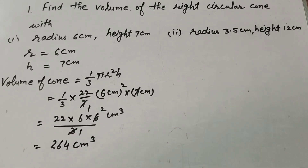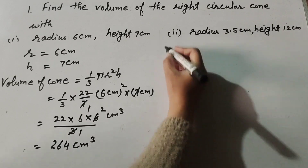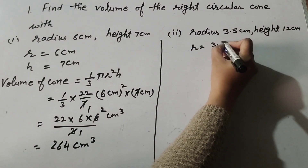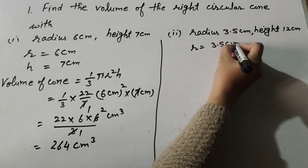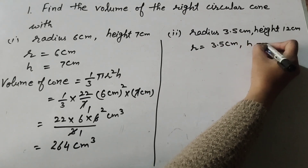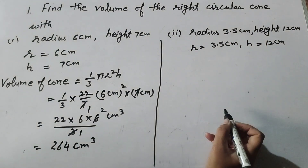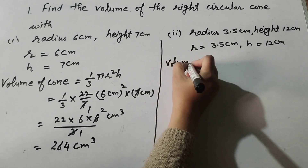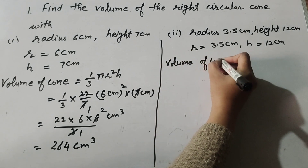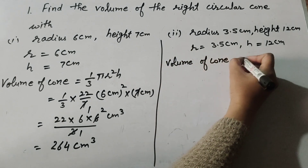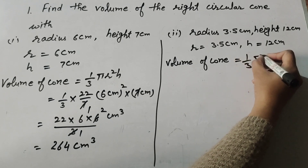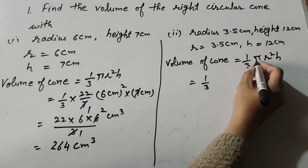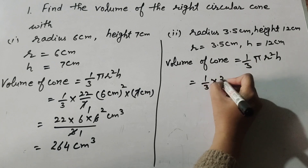Now we move to the second part. Radius r is equal to 3.5 centimeter and height h is equal to 12 centimeter. We find the volume of the cone using the same formula: Volume = 1/3 × π × r² × h, where π = 22/7.